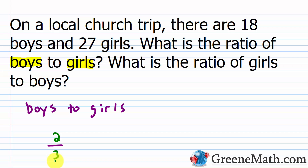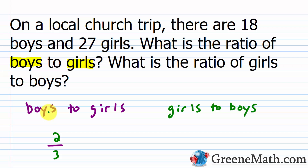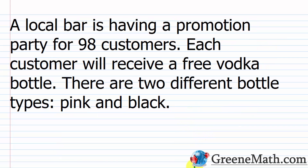If it asks for the ratio of girls to boys, we just flip it around. If I have two boys for every three girls, then I have three girls for every two boys — the ratio is three to two.